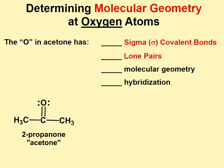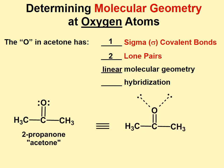Another example is acetone, a common solvent. The oxygen in acetone has one sigma covalent bond and two lone pairs. The molecular geometry is linear as we see it. Looking at the lone pairs on the oxygen — bonded to a carbon, with a lone pair and a lone pair — those electron pairs are as far apart as possible, giving sp2 hybridization. So the oxygen in acetone has sp2 hybridization.